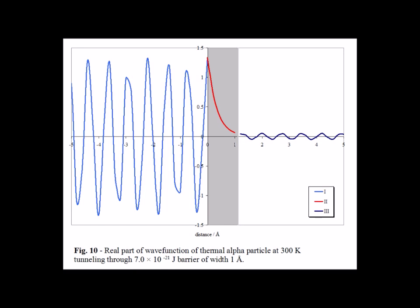In figure 10, we have our third and final particle, an alpha particle, attempting to tunnel through a barrier 1 angstrom wide through a potential of 7 times 10 to the minus 21 joules. And we can see by this small amplitude in region 3, the dark blue wave function, that under these conditions, the alpha particle has a very small probability of tunneling through, thereby showing that the increase in mass going from an electron to a proton to an alpha particle seriously decreases the probability of tunneling.